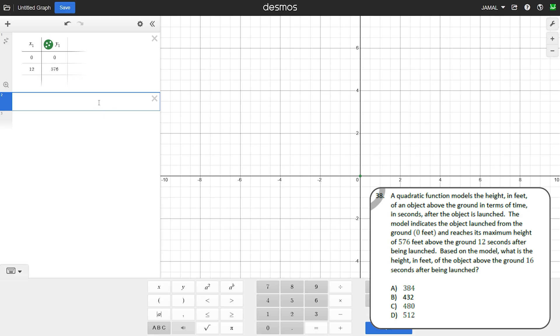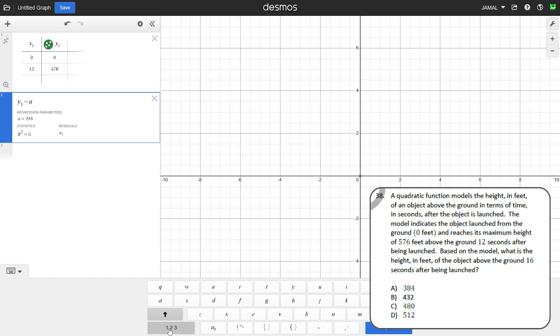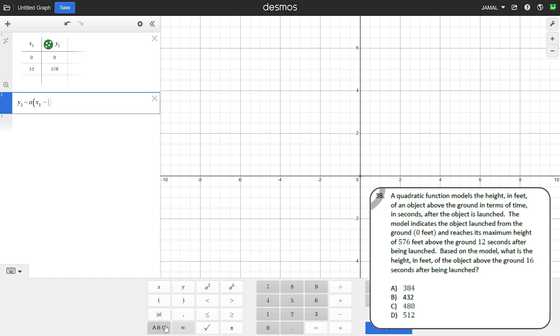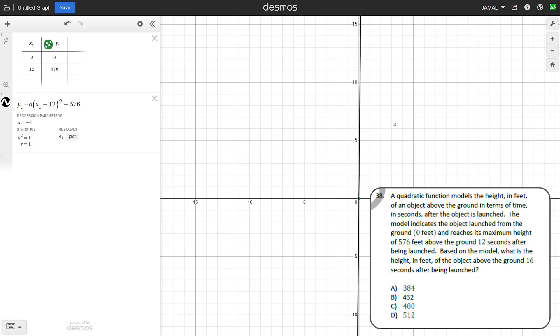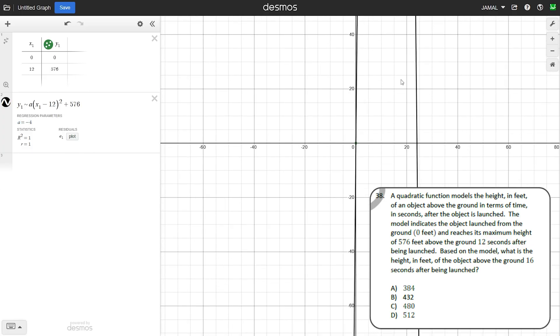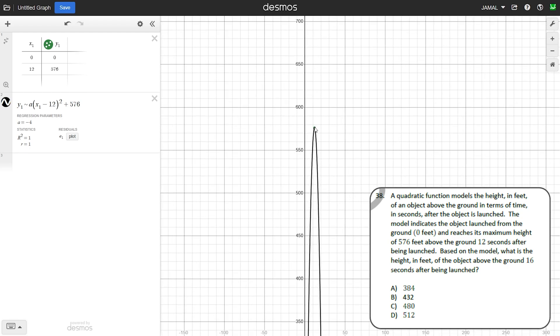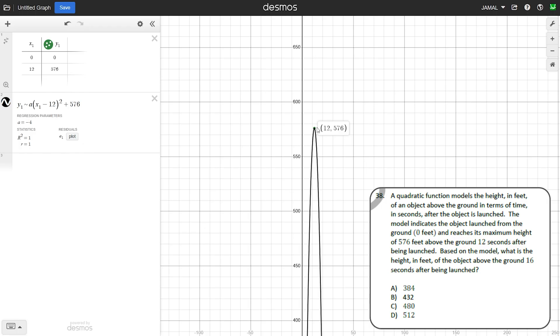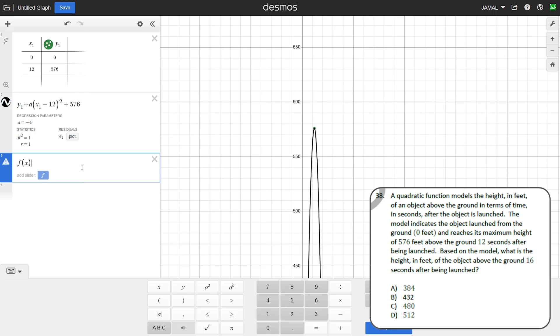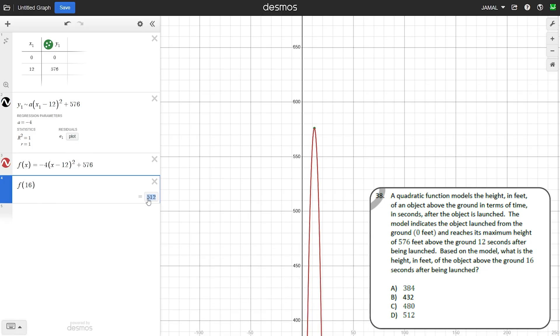We know that its maximum height was at 12 seconds and the maximum height was 576. Because it is maximum, we can use the vertex form of the quadratic equation. It looks like a(x - h)² + k, where (h,k) is the vertex. We can see that our a is minus 4, and this is our vertex, the maximum point, the maximum height the object reaches. Right now we can rewrite this equation with minus 4 instead of a, with regular x, and substitute our 16 instead of x. We get the answer 512, which is D.